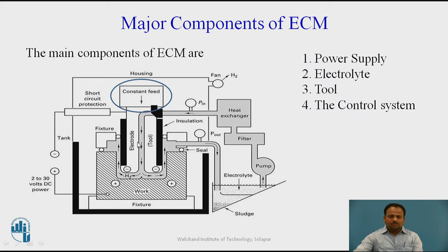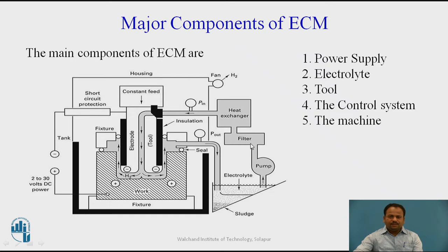This constant feeding acts with the help of the control system. In the entire machine used for the electrochemical process, the electrolyte is pumped through a pump at high pressure and passes through a filter. Whatever sludge is formed is filtered out, and the temperature is controlled so that the electrolyte passes through the tool to carry out the reaction.